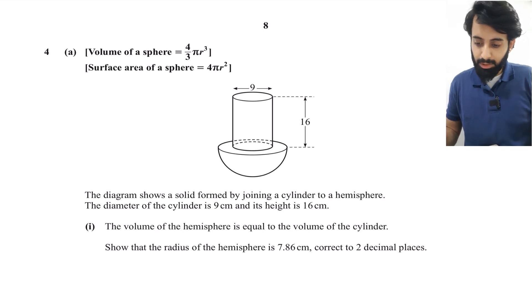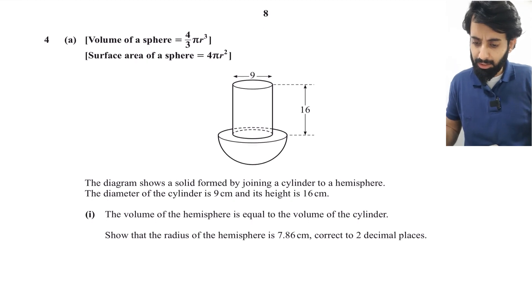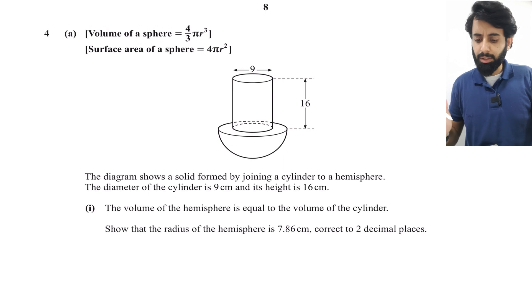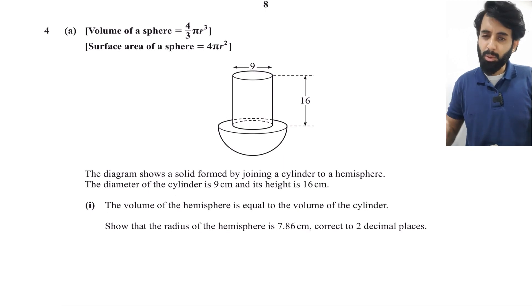Here's the question. It's a fairly difficult question - I'm not going to say it's too easy, but it's not too difficult either. I think it ranks somewhere in the middle. We have a solid formed by joining a cylinder to a hemisphere. The diameter of the cylinder is 9 cm and its height is 16 cm.